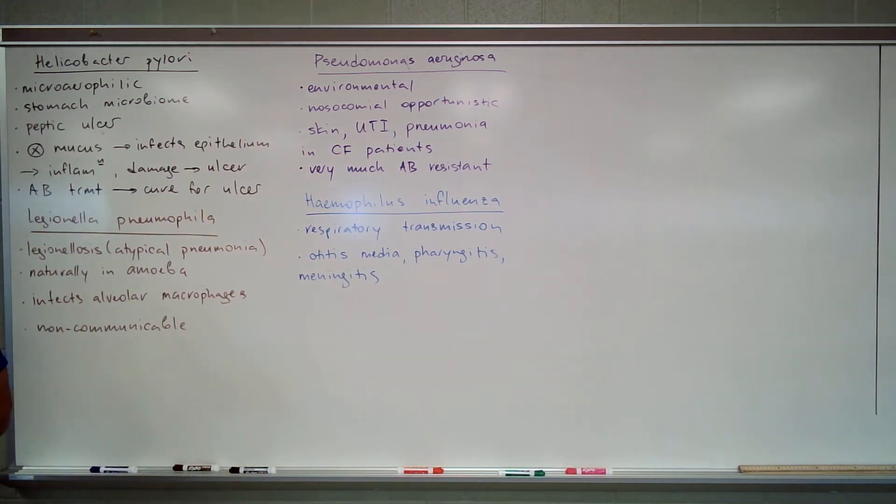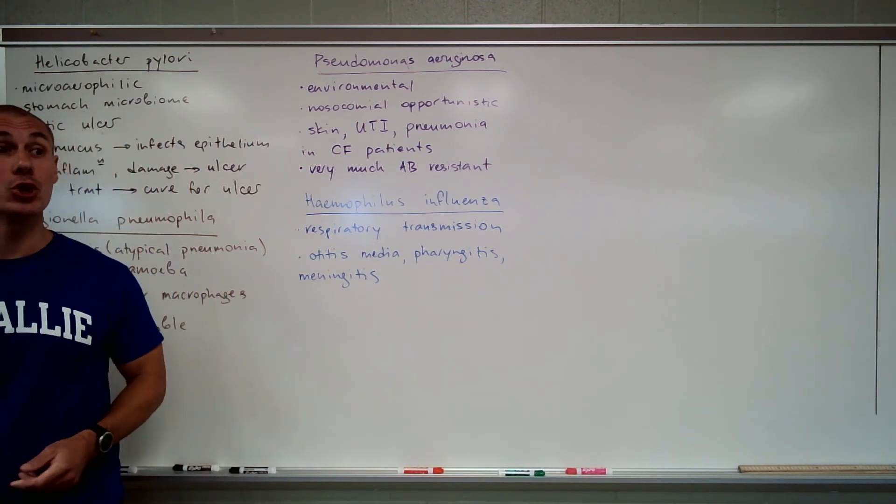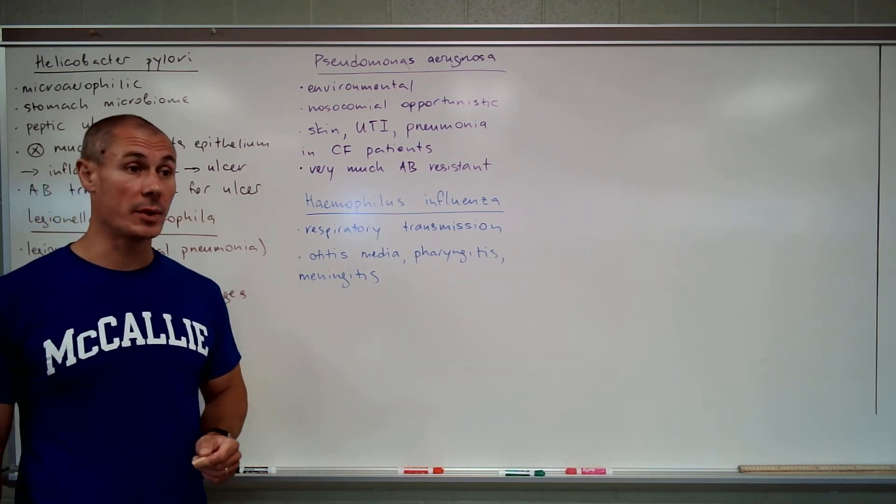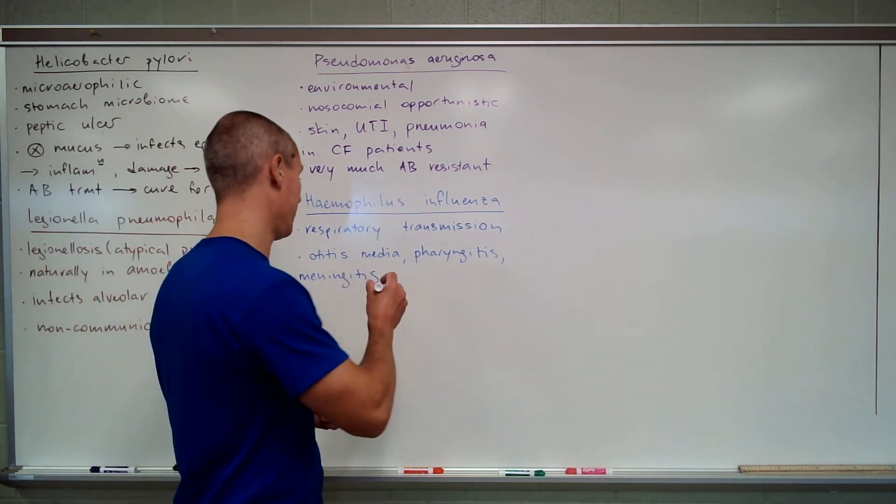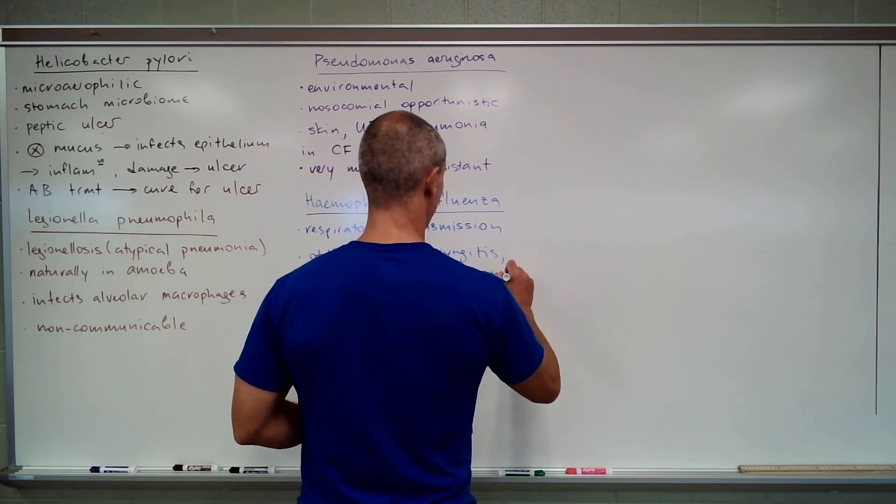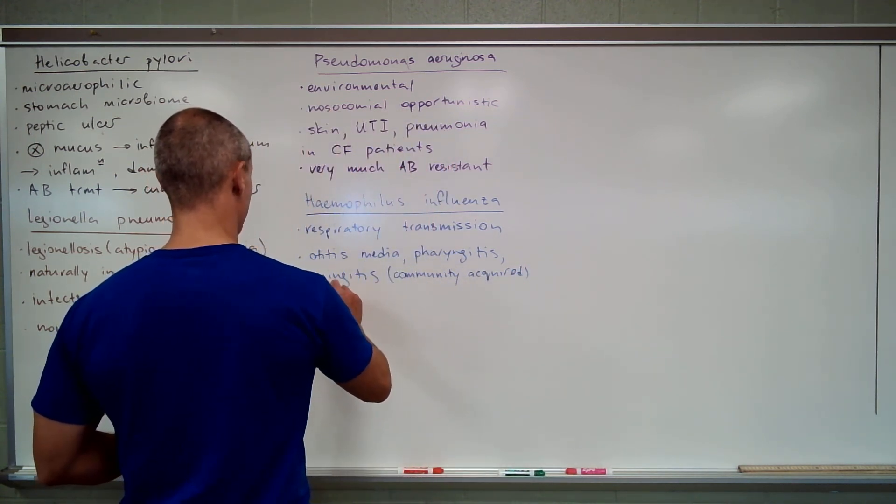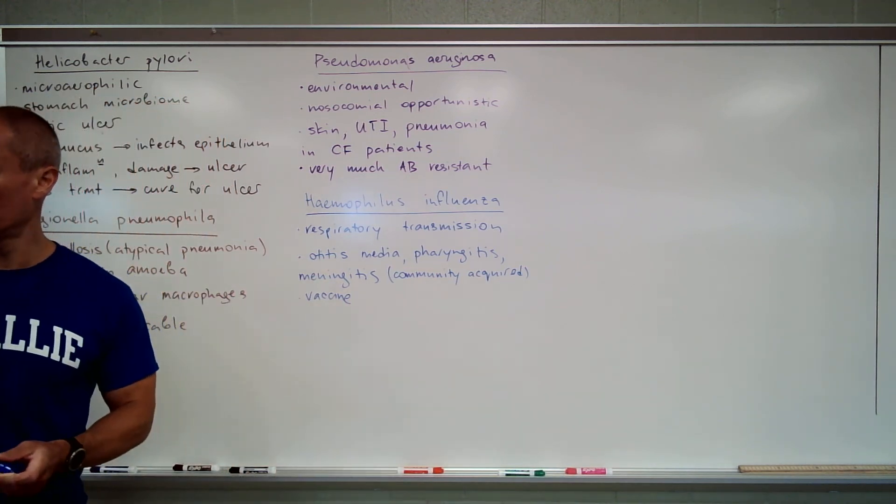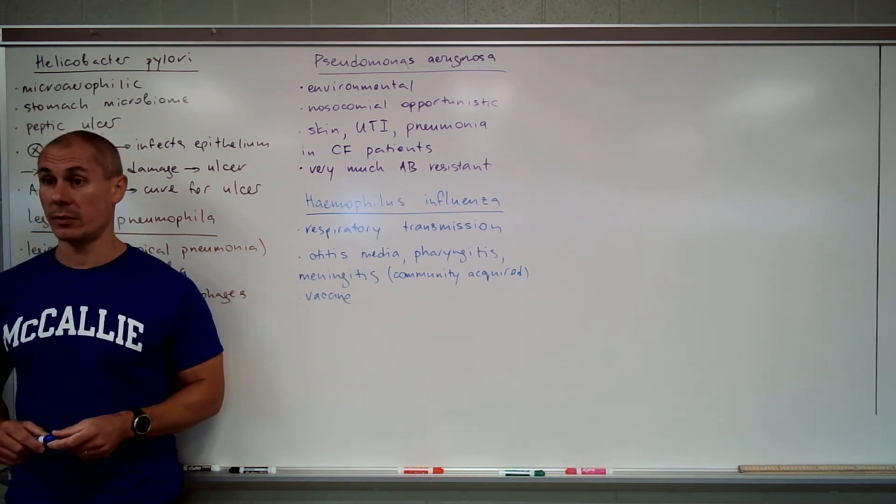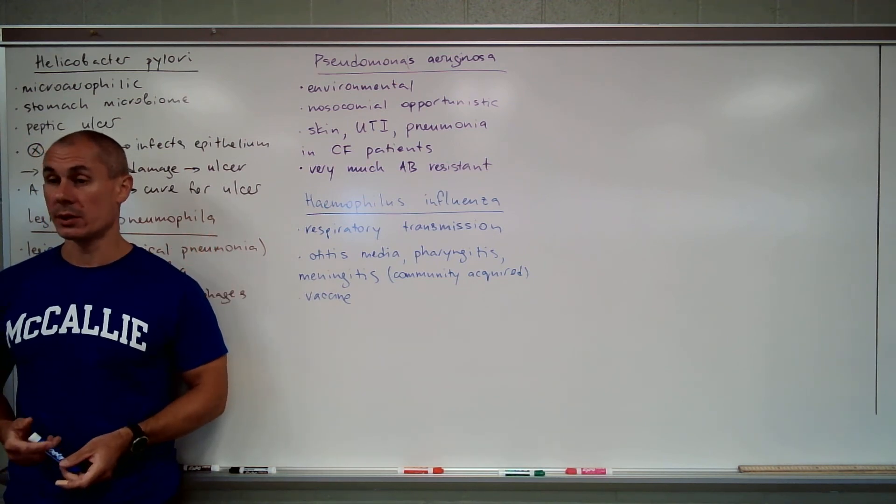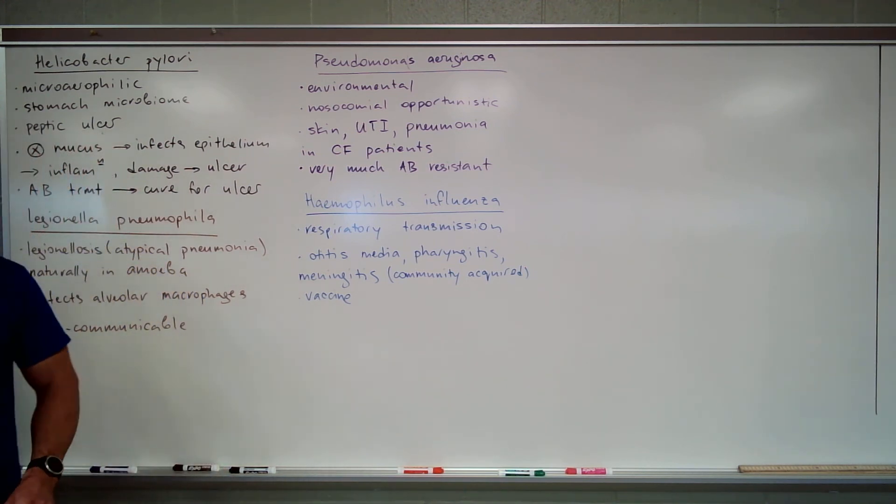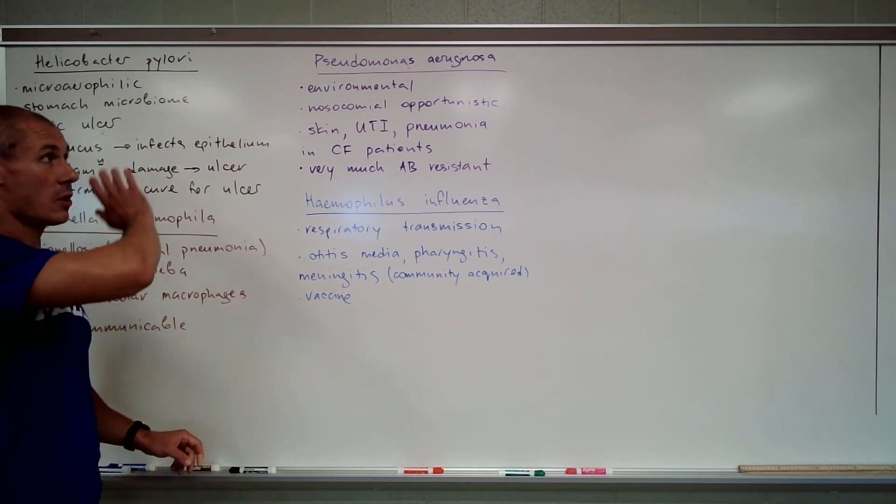But it is most known for meningitis. Along with Streptococcus pneumoniae and Neisseria meningitidis, along with pneumococcus and meningococcus, Hemophilus influenzae is the third most common cause of community-acquired meningitis. Thankfully, we have a vaccine. You may have heard about it, it's the Hib vaccine. One of three vaccines that are mandated by the Ohio Department of Health. Before kids get to school, they must get all three meningitis vaccines.